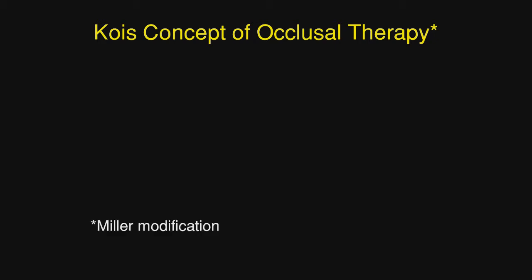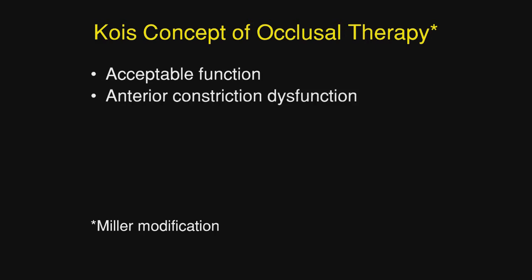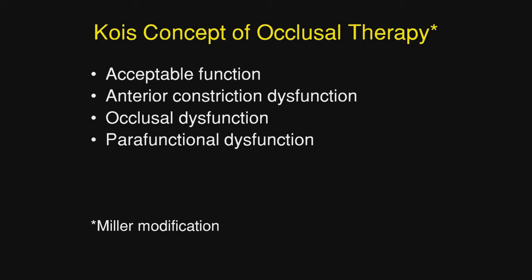The case we're going to show is based on Coase's concept of occlusal therapy, which I have slightly modified. First, he has acceptable function. The case we're going to show is an anterior constriction dysfunction, occlusal dysfunction, and parafunctional dysfunction, as well as neurological dysfunction. The latter three will be discussed later in a video which will be added.